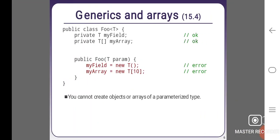Generics and arrays. public class Foo<T> { private T myField; // ok private T[] myArray; // ok public Foo(T param) { myField = new T(); // error myArray = new T[10]; // error } } You cannot create objects or arrays of a parameterized type.